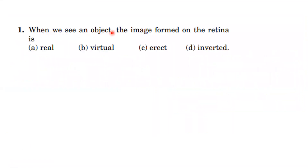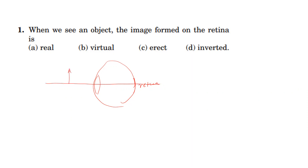When we see an object, the image is formed on the retina. This is the principle of access. The object is like this, and the image is an inverted image. If the actual retinal image is formed, the actual form is the real image. The retinal form is the real image, and the inverted image.